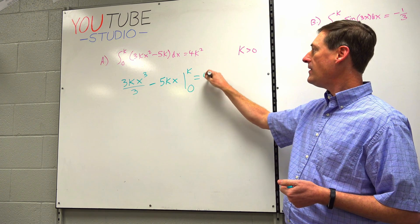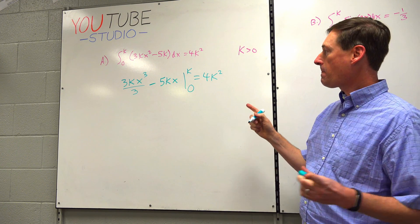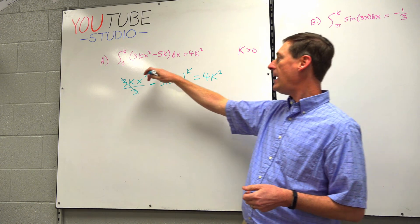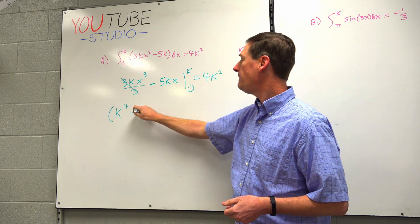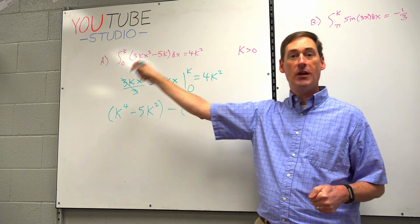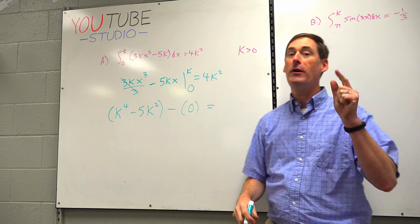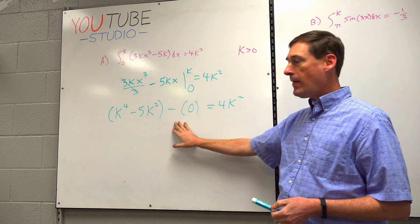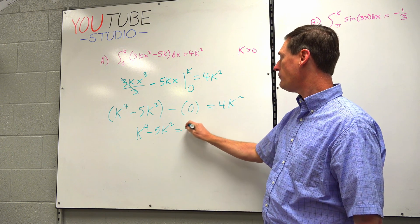Evaluated from 0 to K, and the outcome should be 4K squared. Cancel the 3s. Plug in the top, plug in the bottom. Remember, it's top minus bottom in this chapter. If we plug in K first, we'll get K times K cubed is K to the 4th minus 5K times K is K squared. There's F of K minus F of 0. If you plug in 0 for all the Xs, you actually just get 0 because it's a polynomial. But sometimes you plug in 0 and you don't get 0, so don't always fall for that. And the outcome should be 4K squared.